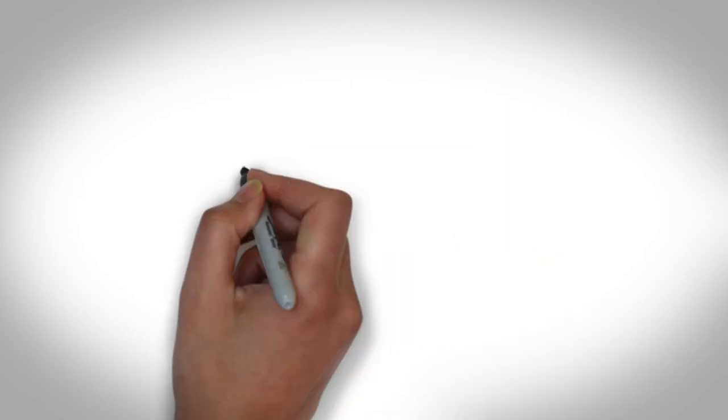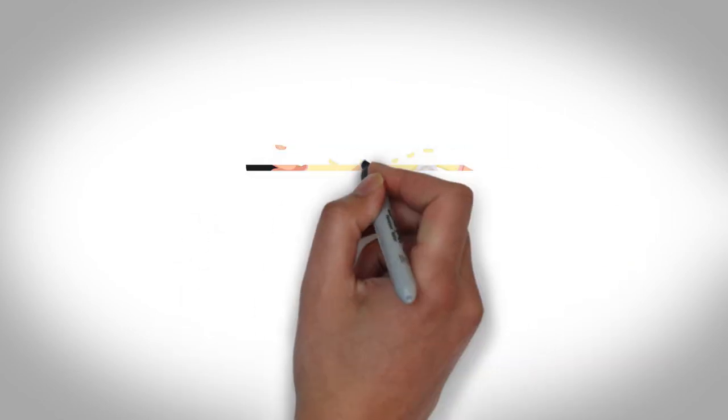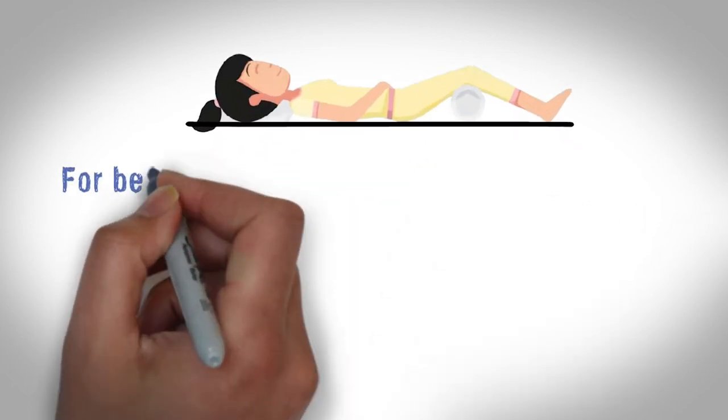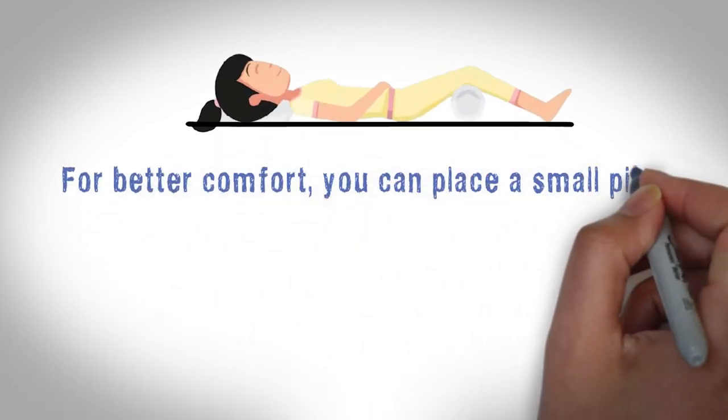The best sleeping postures are on your back or on your side. While sleeping on your back, select a pillow that supports your neck in a neutral position. Lay with your back flat. For better comfort, you can place a small pillow under your legs to support the knees and take pressure off your lower back.